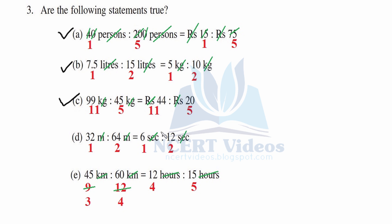Part d: Meters cancel. 32 times 2 is 64, so 1 is to 2. And 6 to 12 gives 1 is to 2 — statement True. Part e: Kilometers cancel and hours cancel. 9 fives are 45 and 12 fives are 60. Then 3 threes are 9 and 4 threes are 12, giving 3 is to 4. But 5 threes are 15, so the ratios are not equal — therefore statement False.